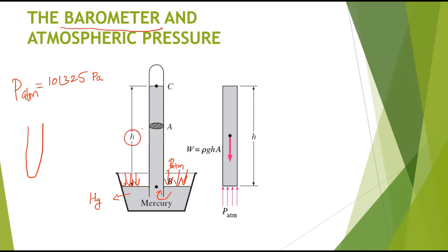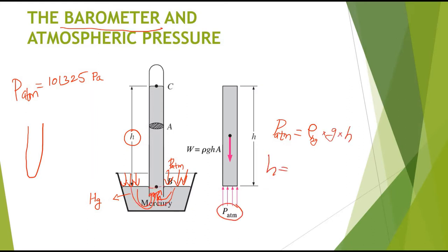The mercury rises to a height h in the test tube. From this height we can find the atmospheric pressure: P_atm = ρgh, which is approximately 760 mm of mercury. So atmospheric pressure is also represented as P_atm = 760 mm Hg, or 76 centimeters.